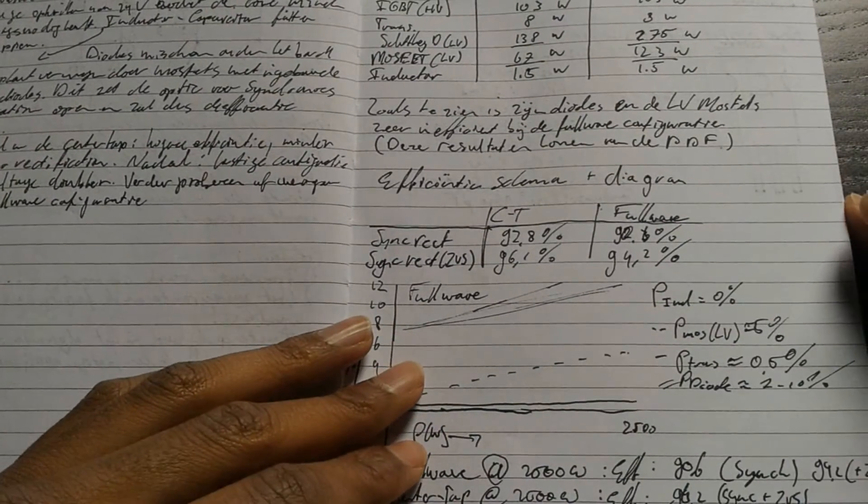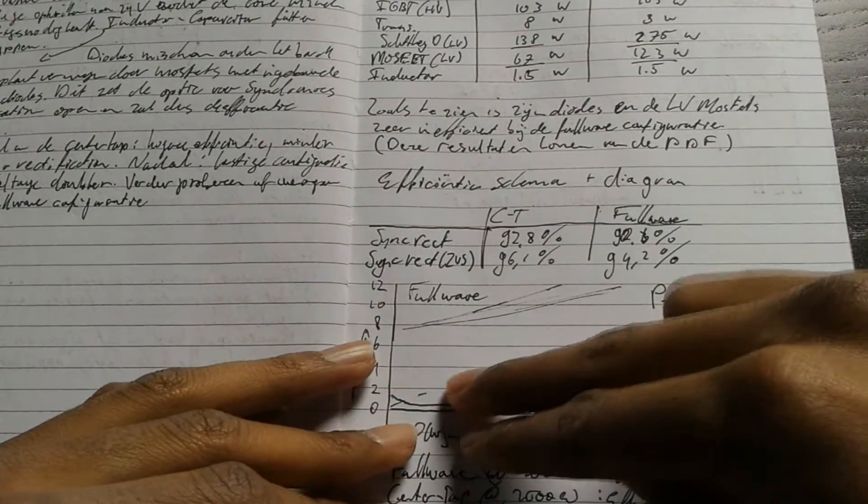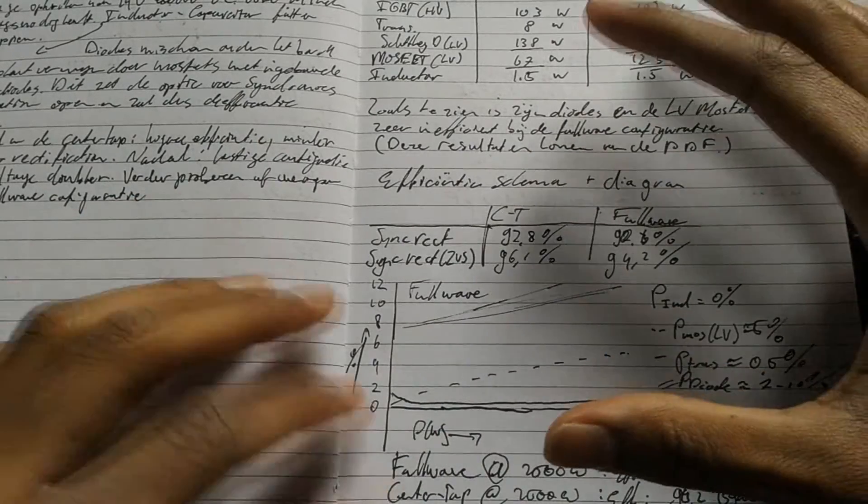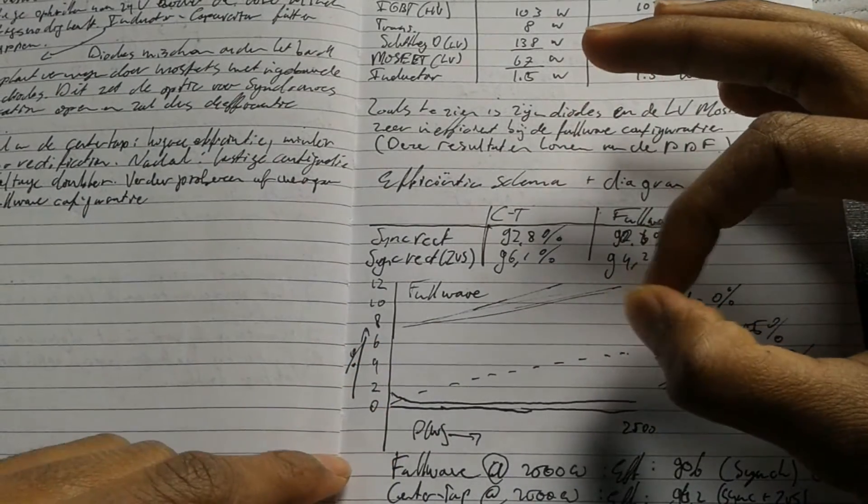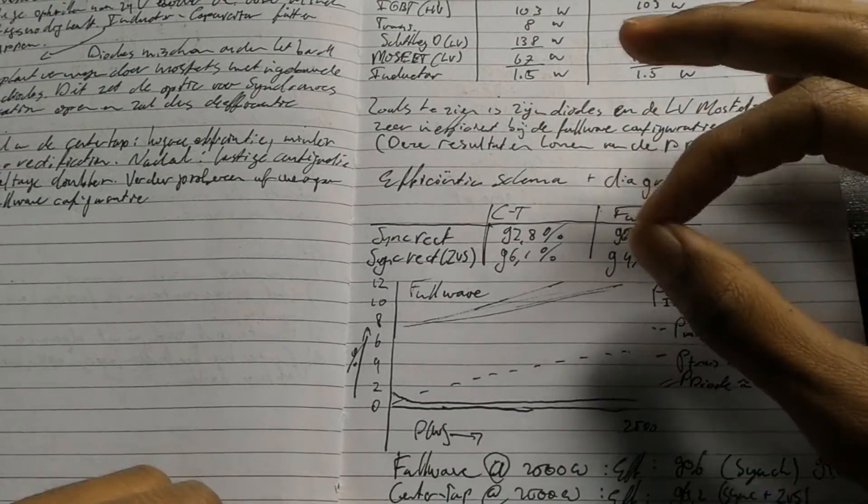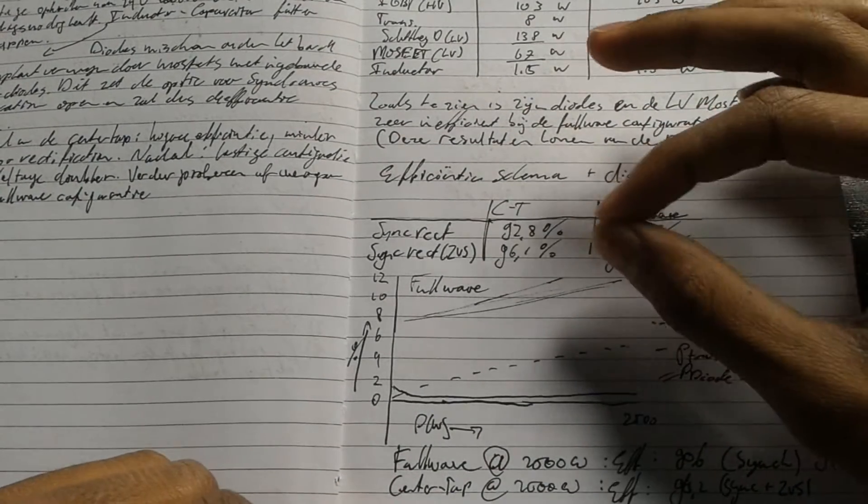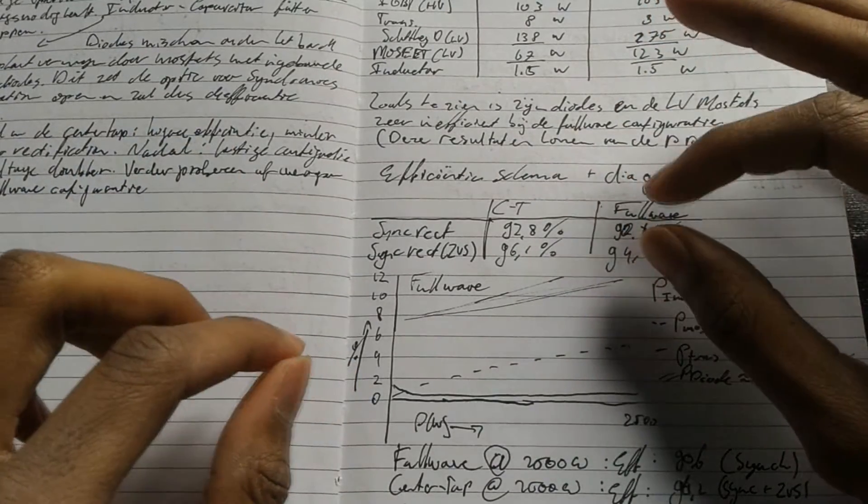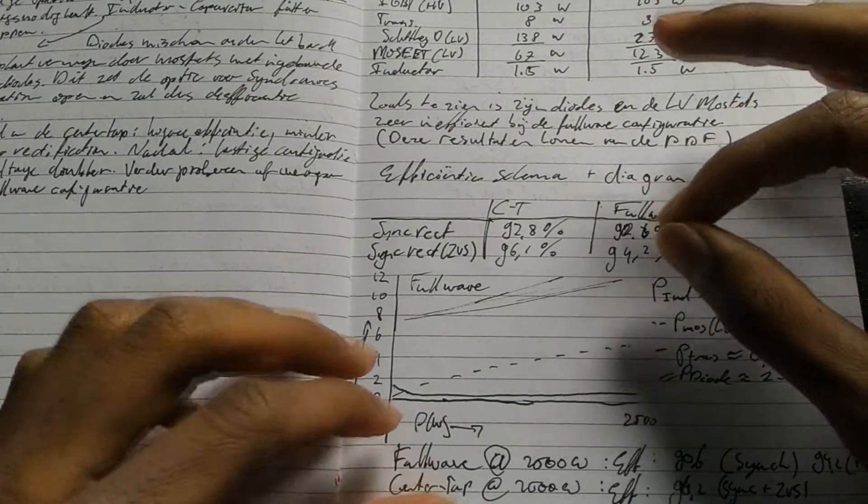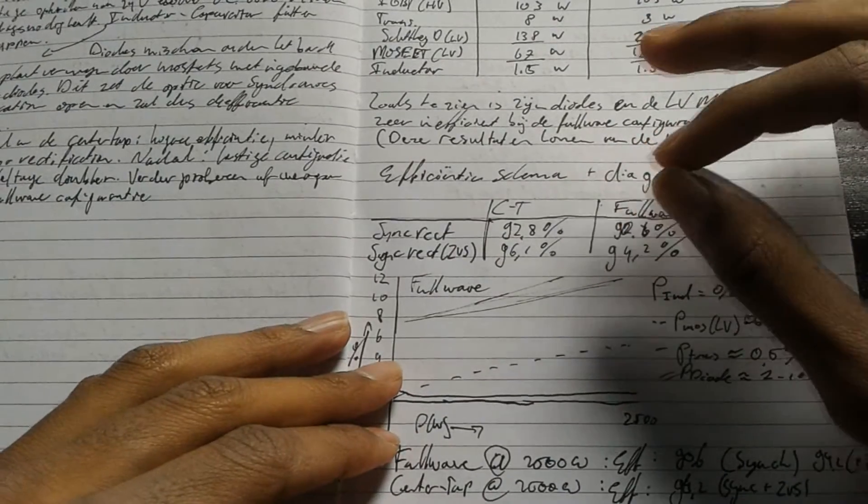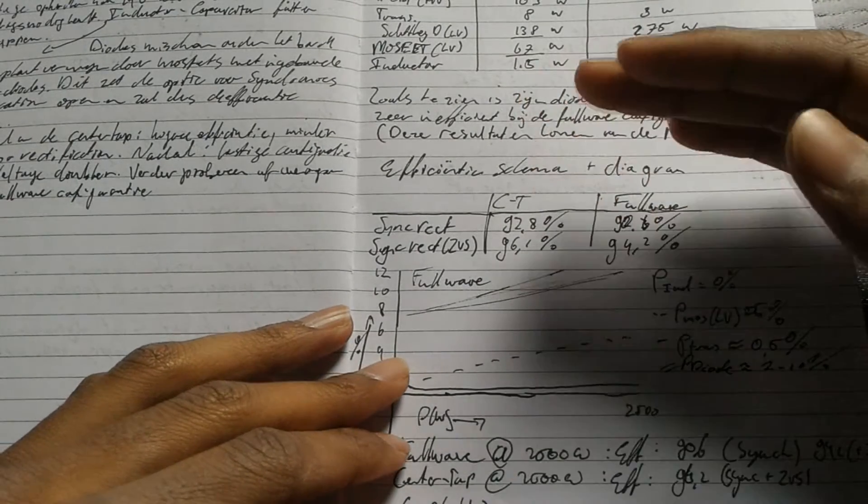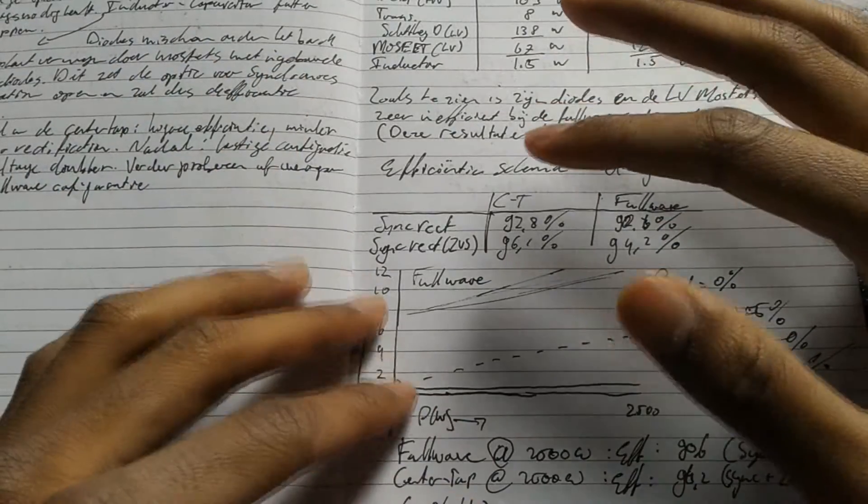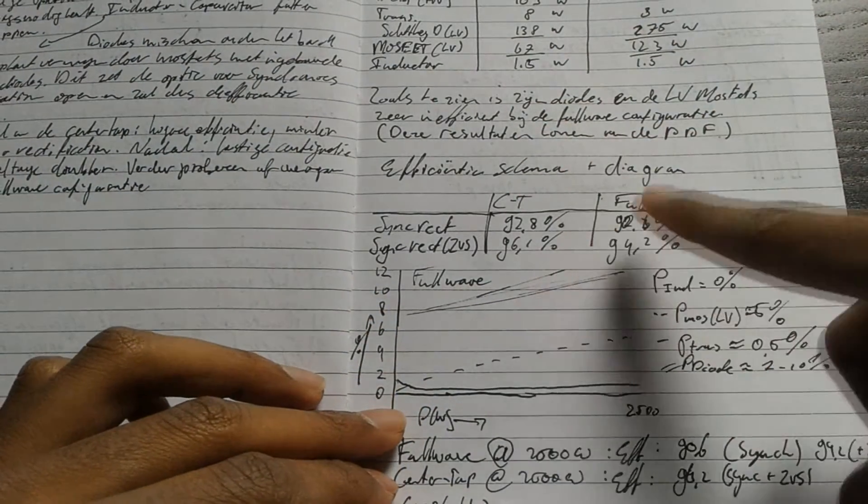Synchronous rectification is just not using a full bridge rectifier or just rectification, but you use a MOSFET and its integrated diode for rectification. This means you won't have any conducting losses on the diodes, but simply only on the MOSFETs. And the MOSFETs RDS on, so the resistance when it's on, is much lower than a normal diode.